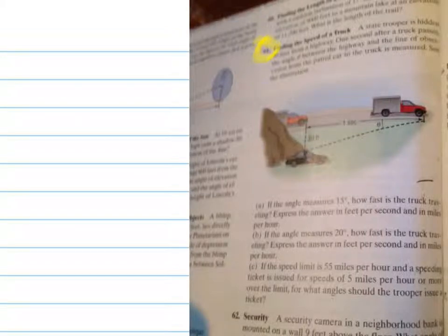Alright, here's a word problem, number 61 there. It says a state trooper is hidden 30 feet from a highway down here. One second after a truck passes, the angle theta between the highway and the line of observation from the patrol car to the truck is measured. See the illustration.